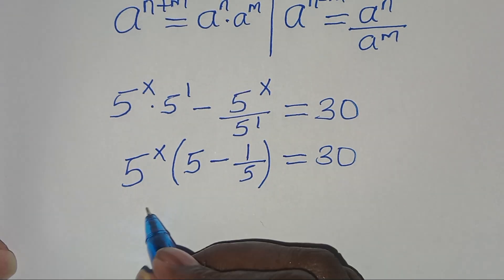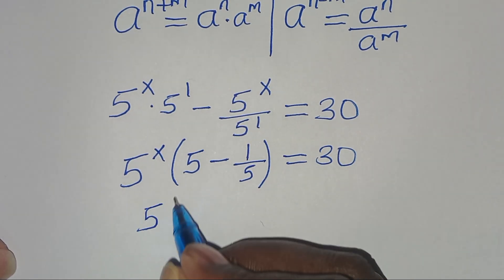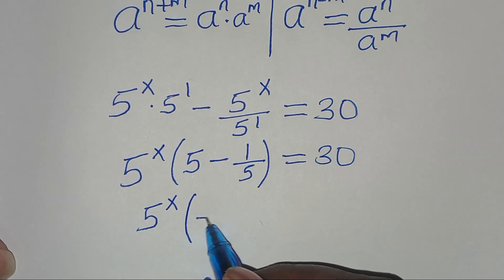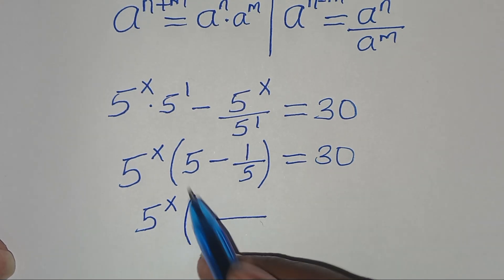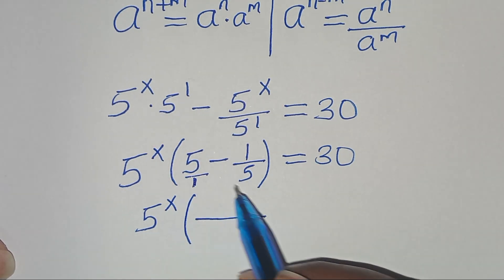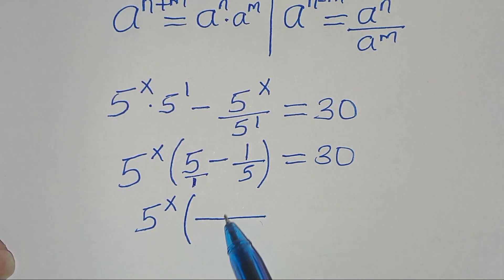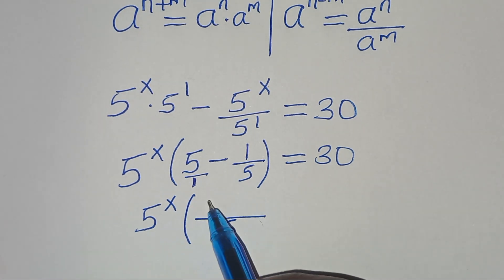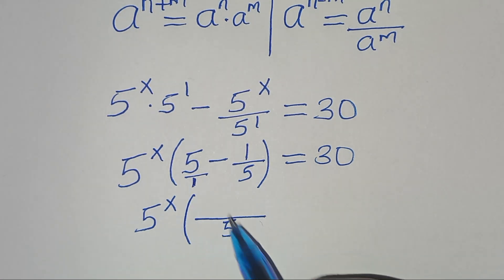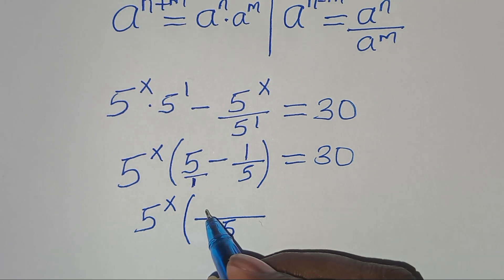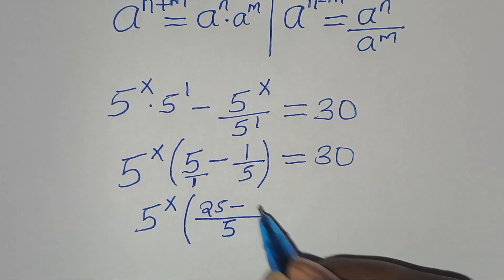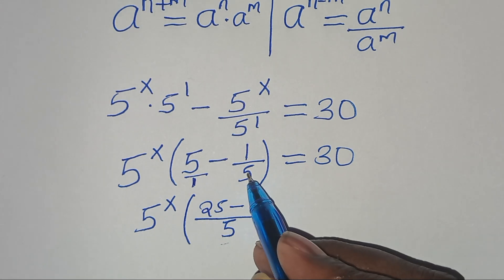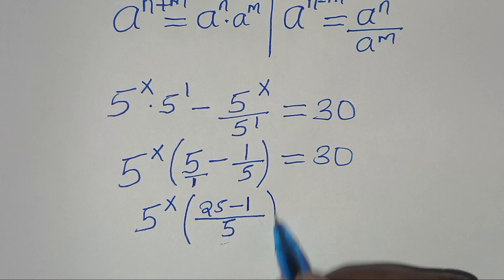Now we have 5 to the power of x into the parenthesis. We take the LCM — 5 is our denominator, so the LCM is 5. 5 divided by 1 is 5, times 5 is 25. Subtract 5 divided by 5, which is 1, times 1 — this is 1.